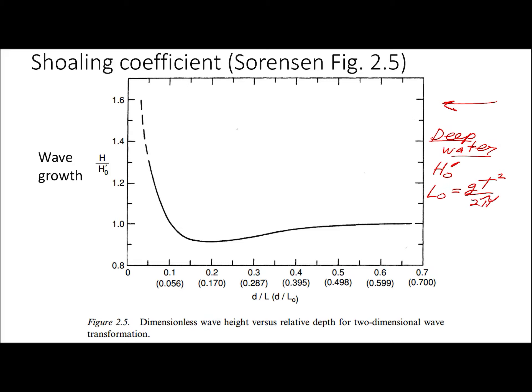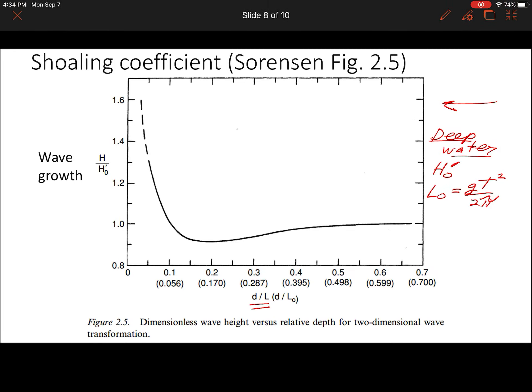Now what we're doing is as we move from left to right on this diagram, we are looking at different values of d over L. So we know d over L is the opposite of L over d.